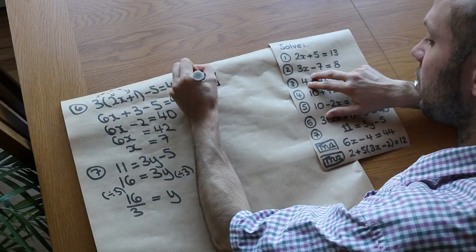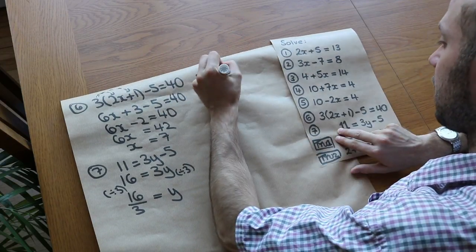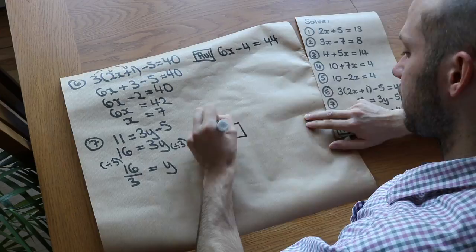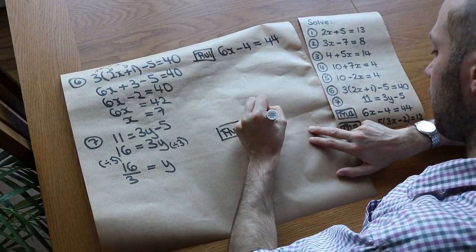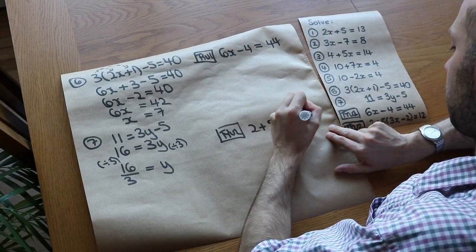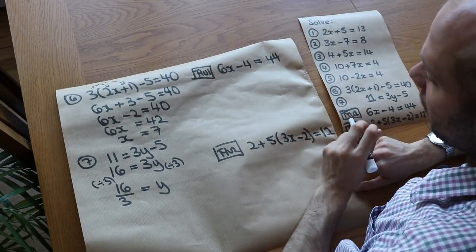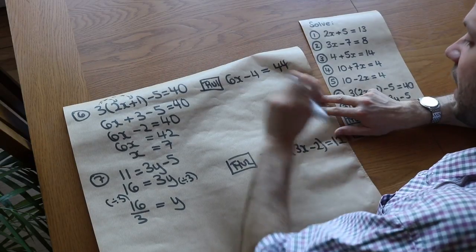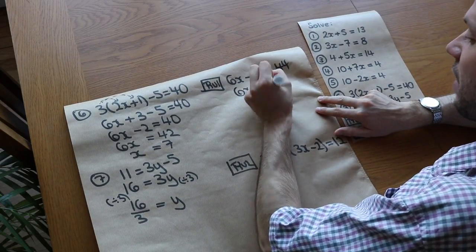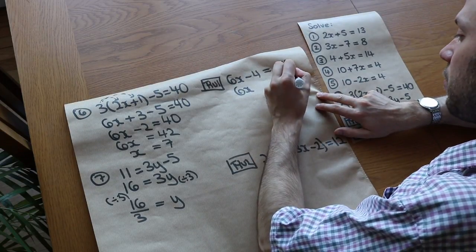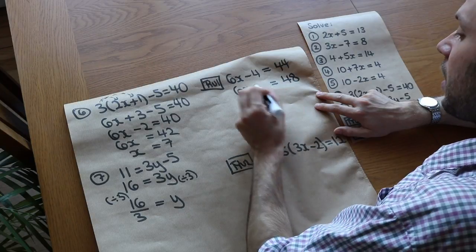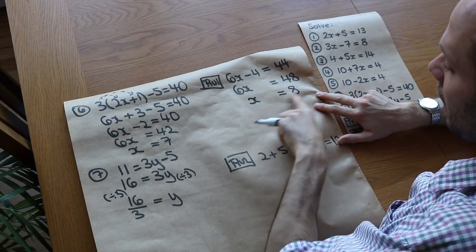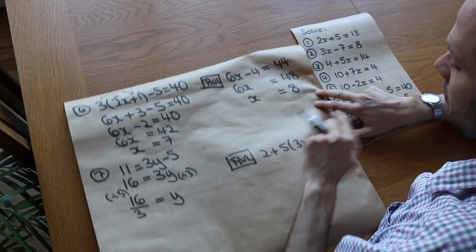Now two test your understanding questions. First: 6x minus 4 is equal to 44. We want to get rid of the minus 4, so we add 4 to both sides. That gives 6x on the left and 48 on the right. Then we divide both sides by 6: 48 divided by 6 is 8, so x equals 8. Let's check: 6 times 8 is 48, minus 4 is 44. That's correct.